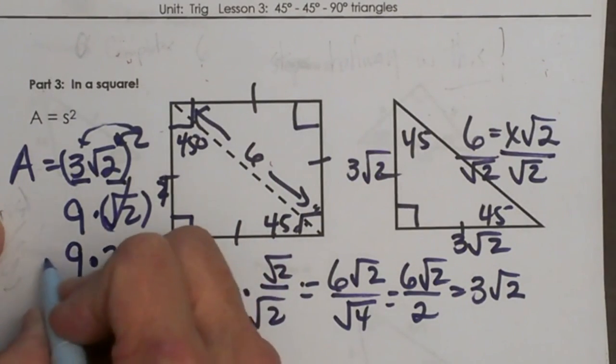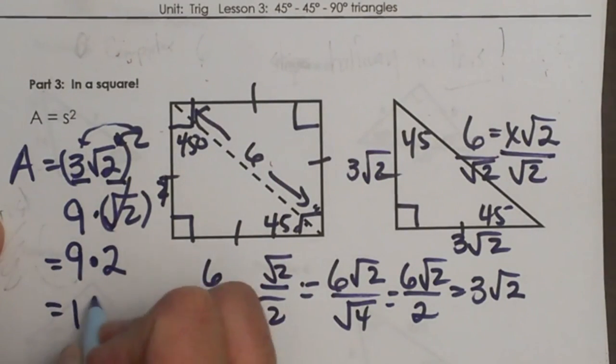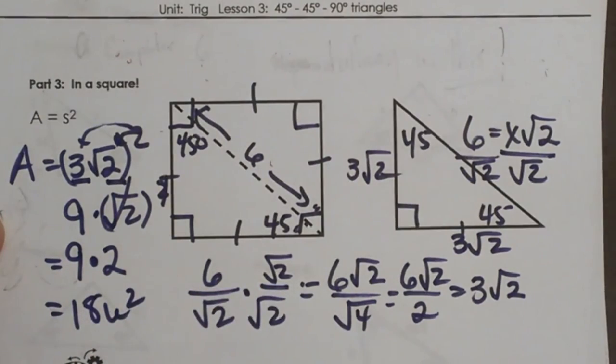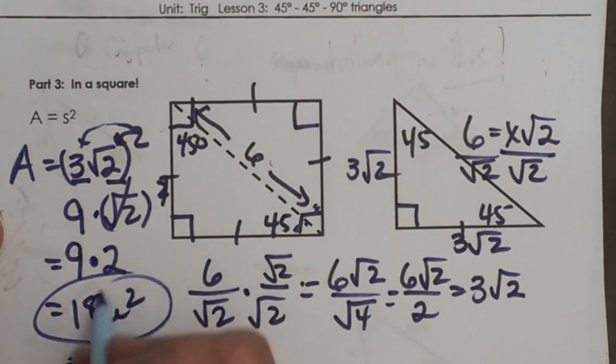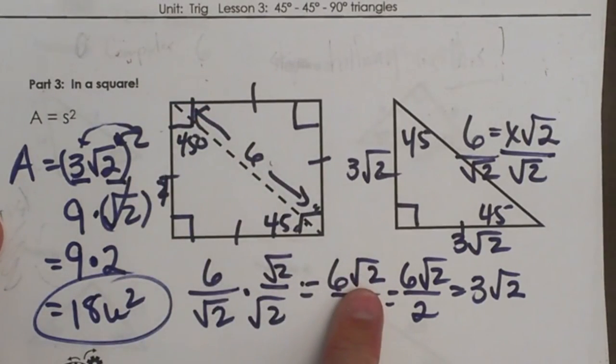So 9 times 2 so the area is going to be 18 square units and that is how you find the area of a square given the diagonal.